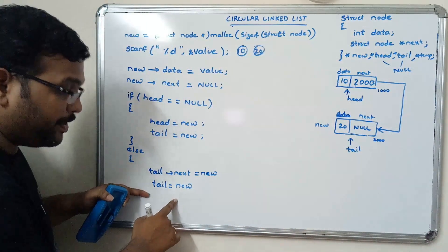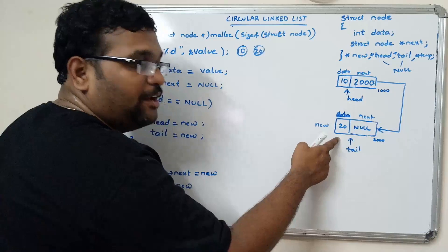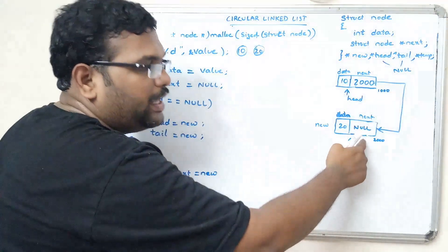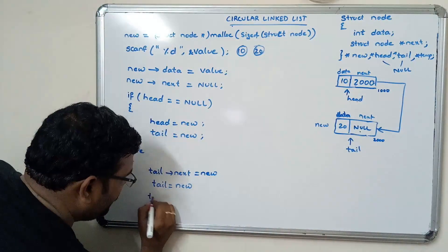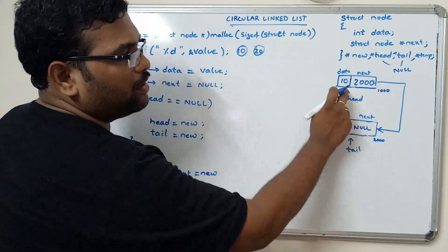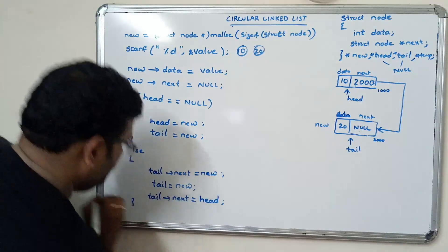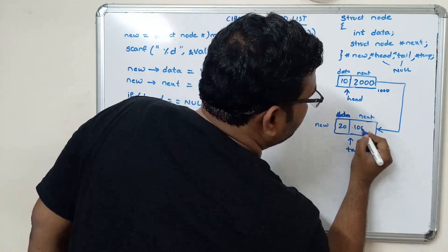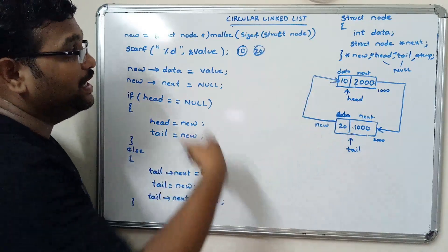After linking the new node, we need to maintain the circular property. So we write tail->next = head. This replaces null with the head address (1000), establishing the circular link from the last element back to the first element.